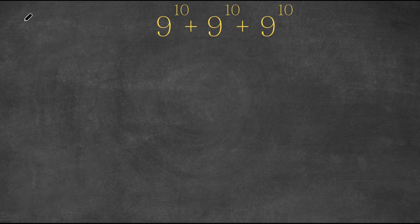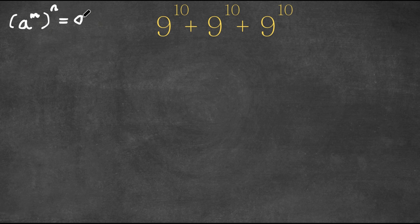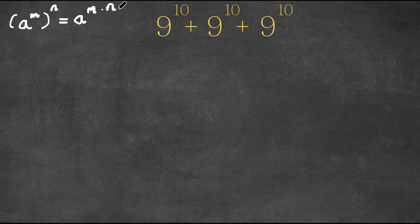Now, if we have something in the form a to the power of m to the power of n, then this can be written as a to the power of m times n. And the same thing can also be vice versa — if we have something in the form a to the power of m times n, this can be written as a to the power of m to the power of n.